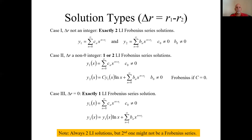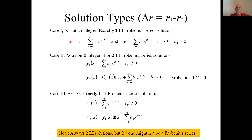What can you do with that? There are three things that can happen, and you can figure it out based on the difference between the indicial roots — where r sub one is always the larger of the two. We call this delta r. If that difference is not an integer, you're guaranteed exactly two linearly independent Frobenius series solutions: one based on the larger indicial root and another based on the smaller. In each case, that first coefficient cannot be zero. The case we just did had a difference of three halves, which is not an integer, so we just did a case one example — and indeed we got two linearly independent series solutions.